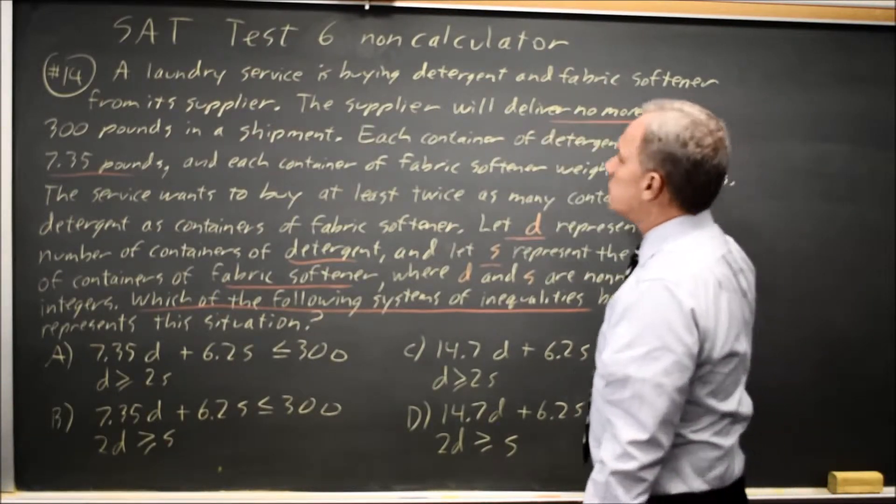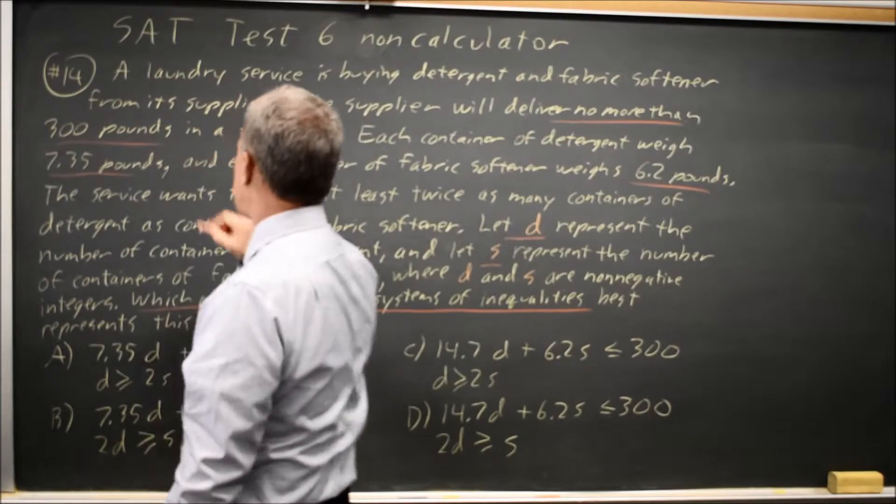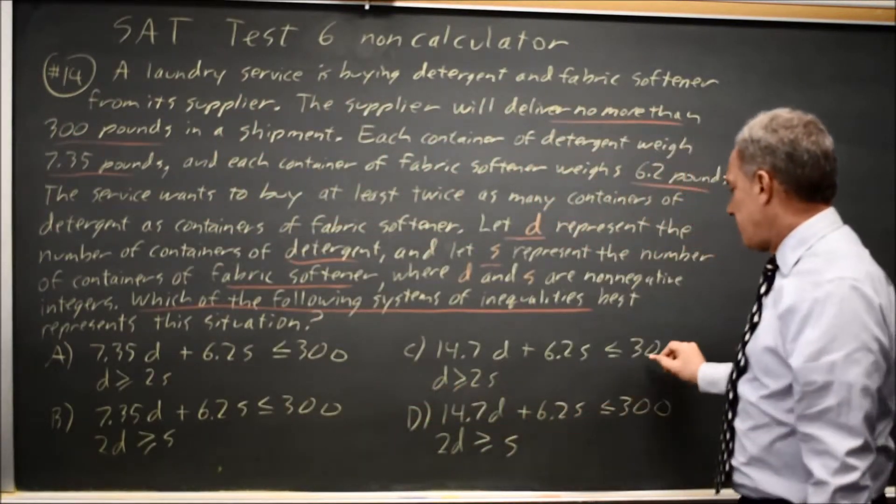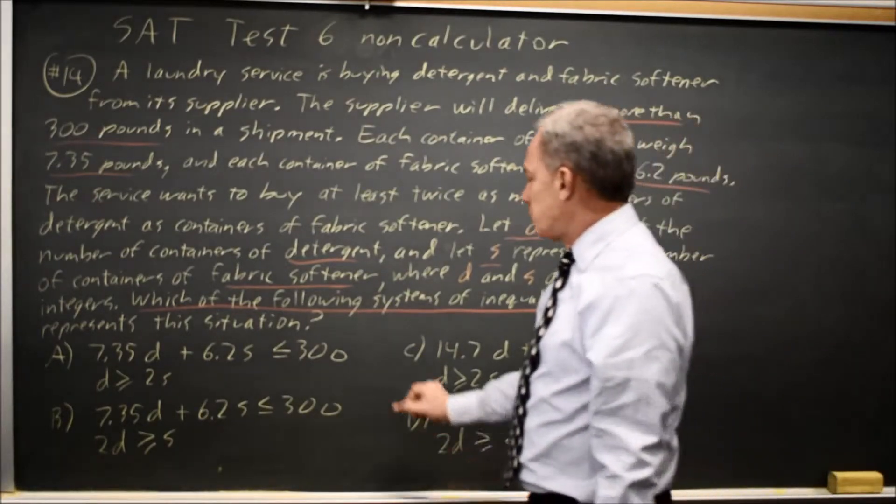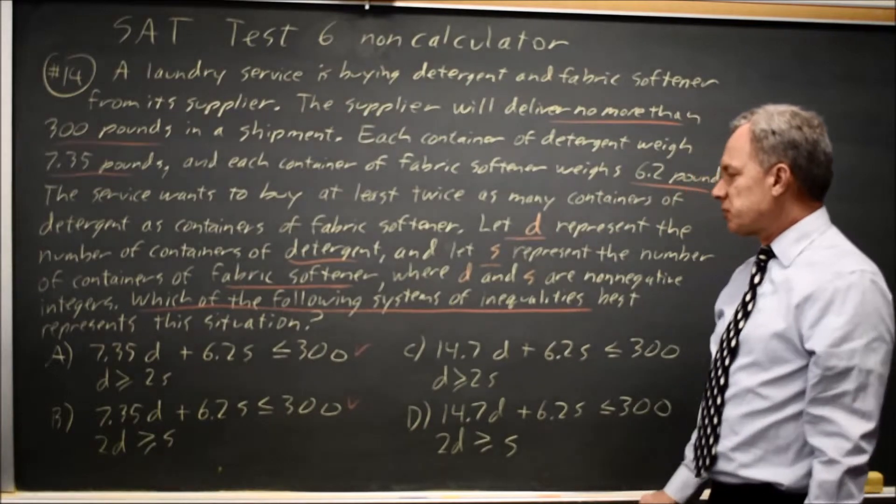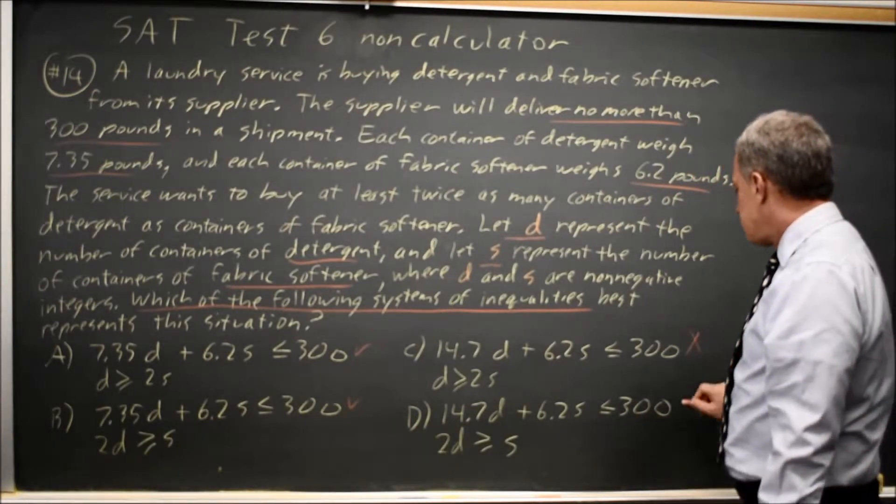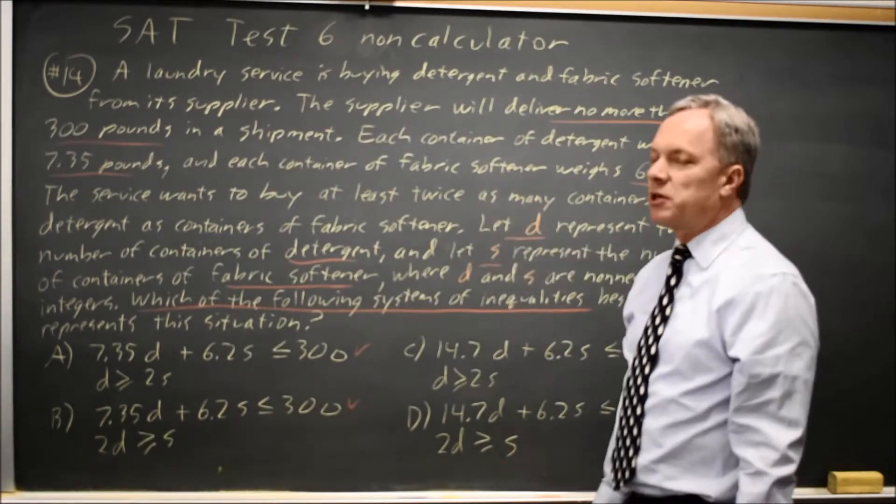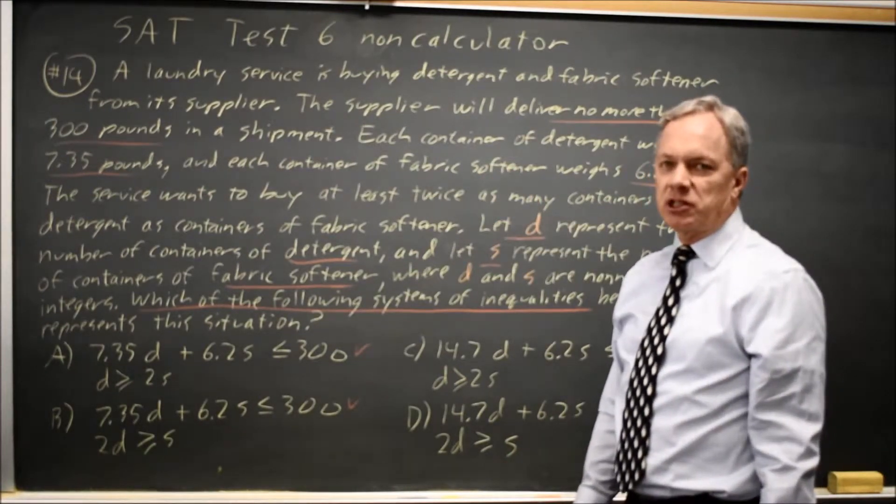Supplier will deliver no more than 300 pounds, so that quantity has to be less than or equal to 300. And all four choices have less than or equal to 300, but only choices A and B are 7.35D plus 6.2S. C and D double the weight of detergent, but that's based on a different statement, not one that deals with the total weight of the shipment.